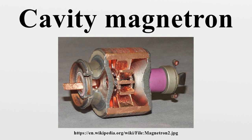The cavity magnetron tube was later improved by John Randall and Harry Boot in 1940 at the University of Birmingham, England. The high power of pulses from their device made centimeter-band radar practical for the Allies of World War II, with shorter wavelength radars allowing detection of smaller objects from smaller antennas. The compact cavity magnetron tube drastically reduced the size of radar sets so that they could be installed in anti-submarine aircraft and escort ships.